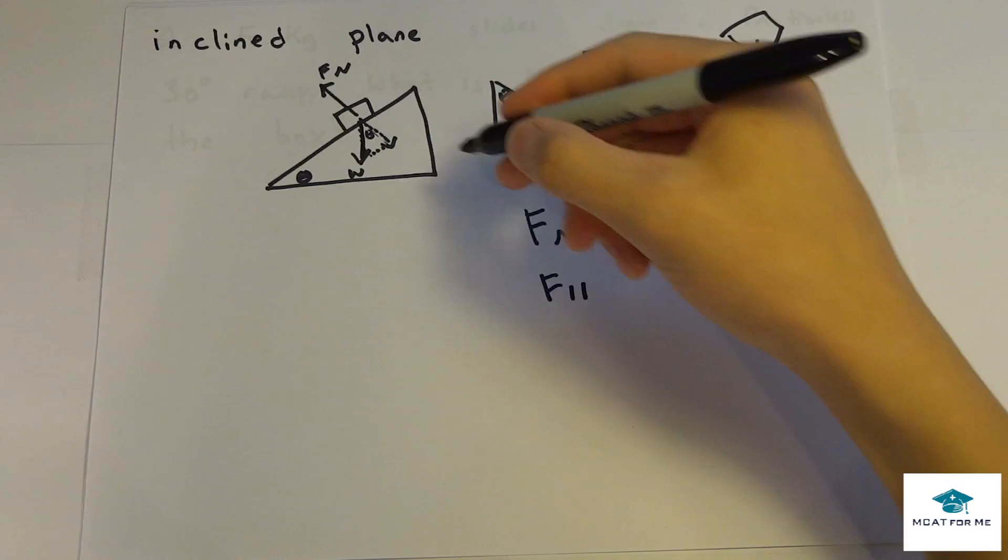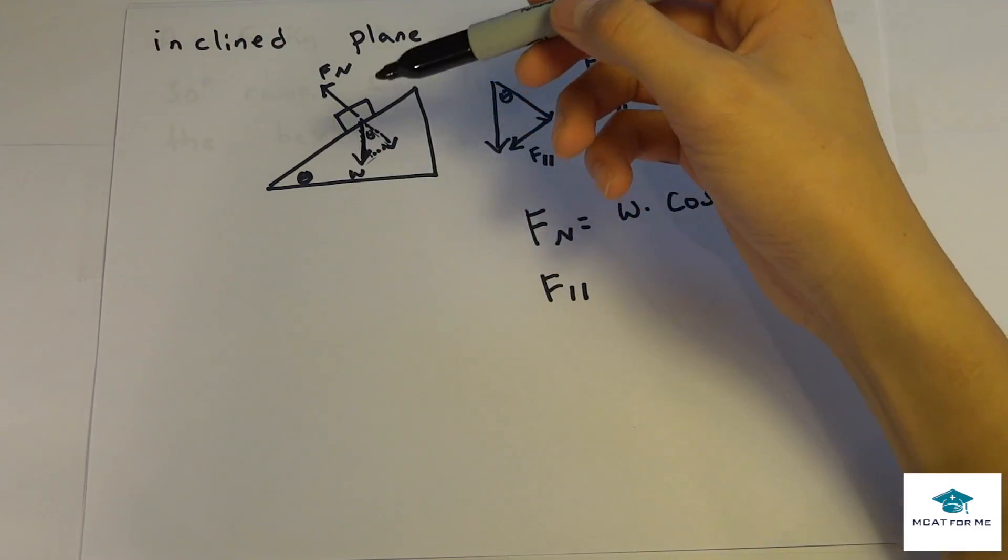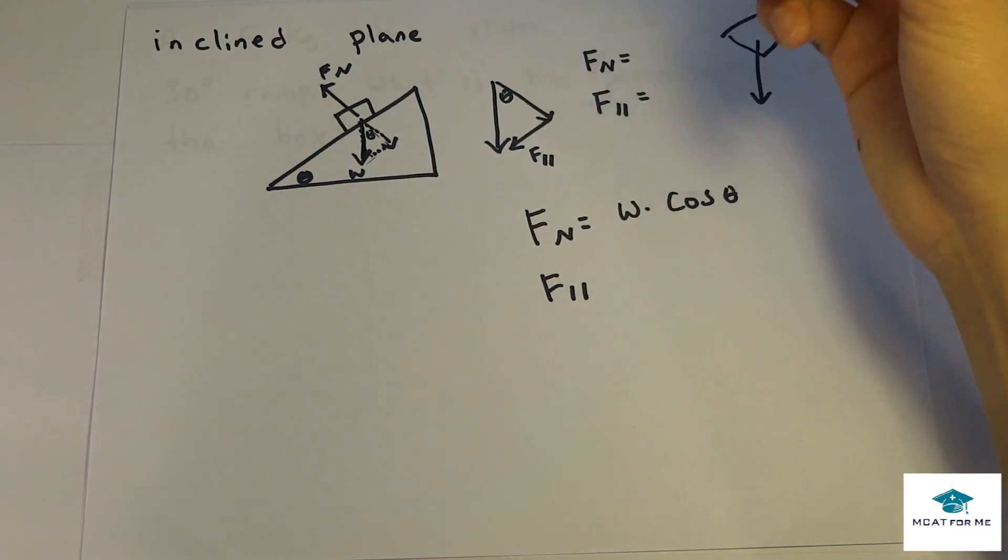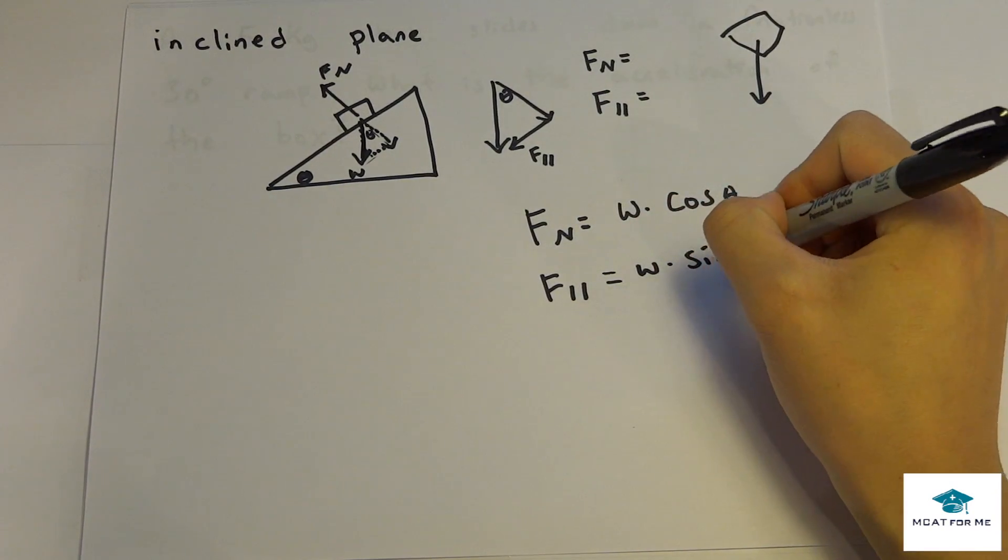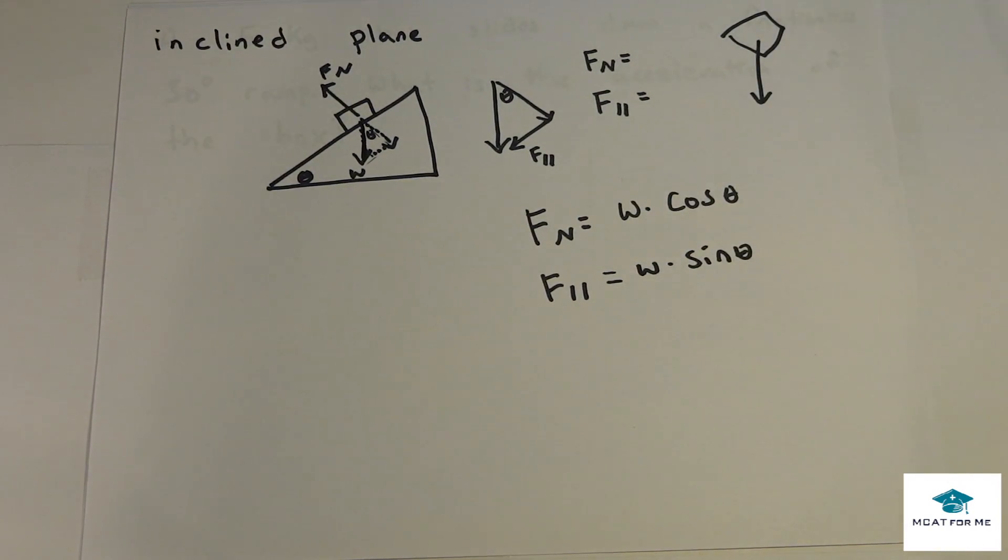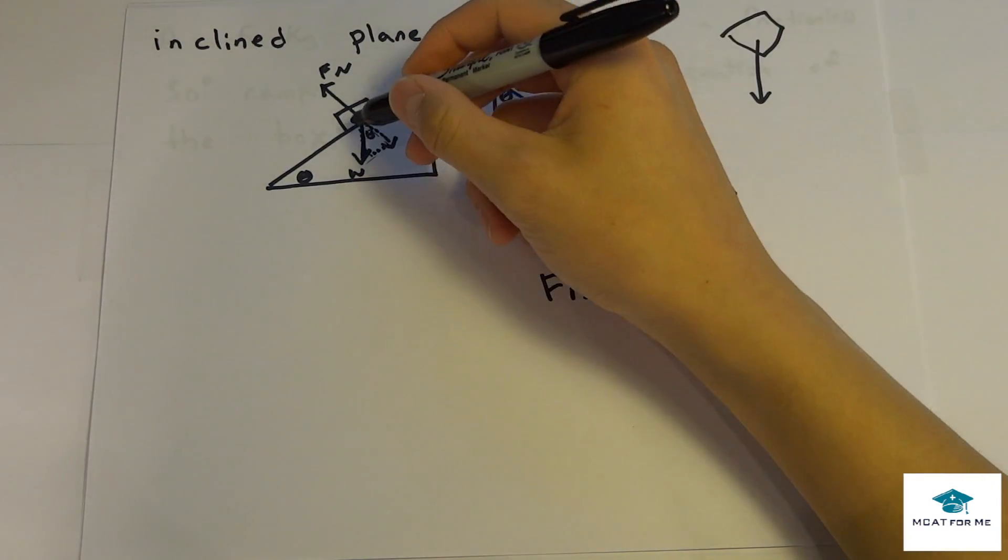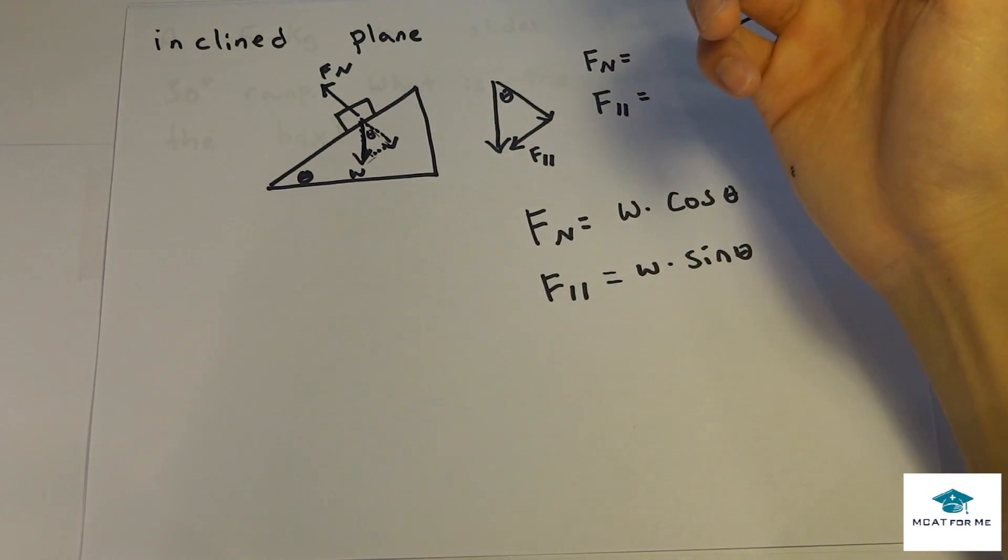And then the parallel, so this parallel is going to be the force that is actually exerted on the object because gravity will push it down, and we know this is weight times sine of theta. And you can remember this however you want, if you just want to memorize that, that's okay too, but you probably should be able to draw this little triangle because it will help a lot on the test.